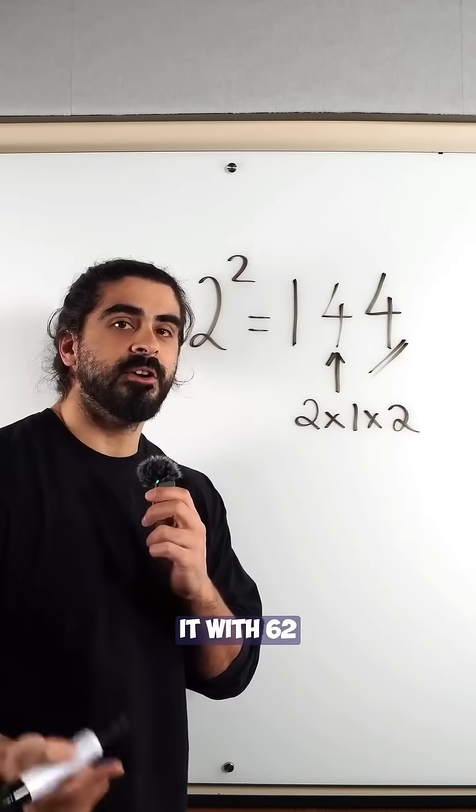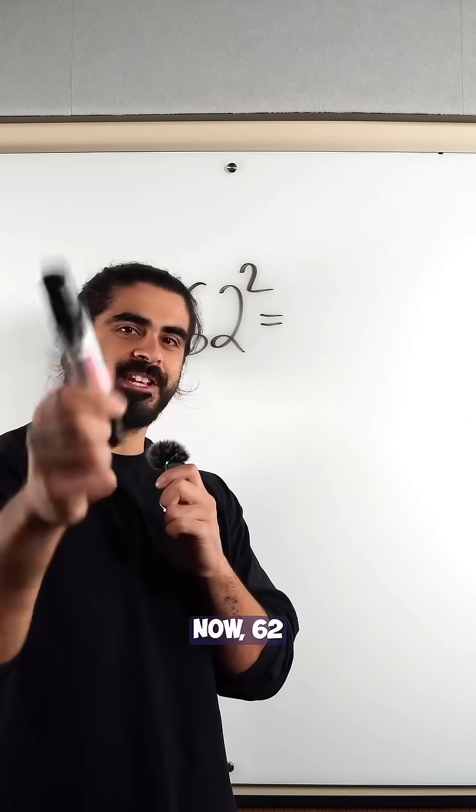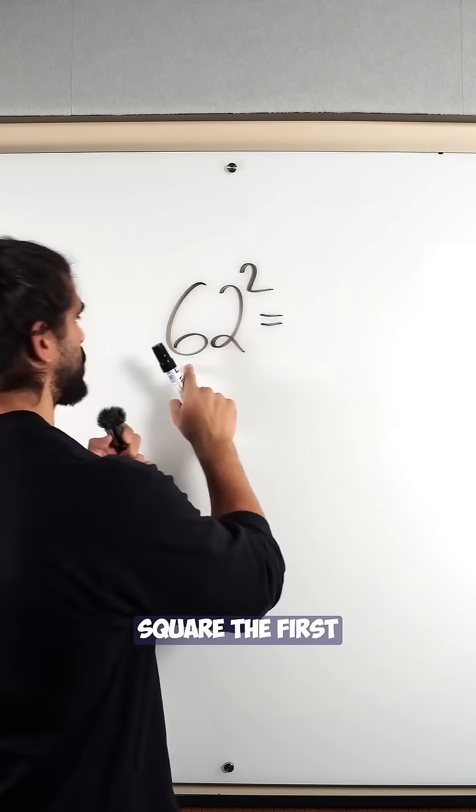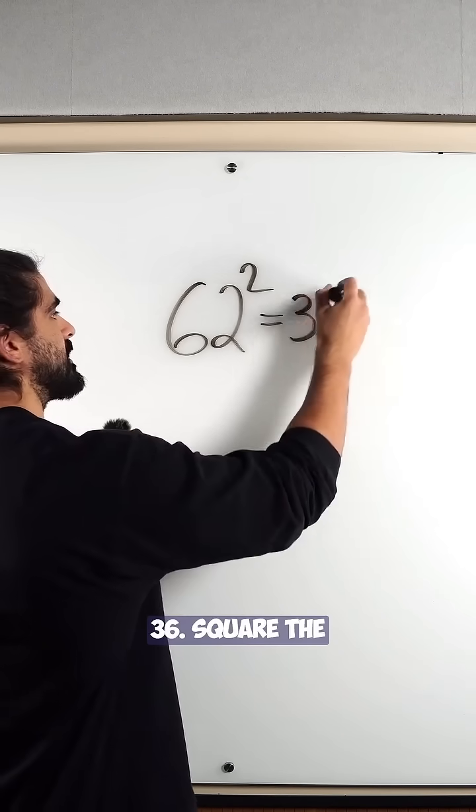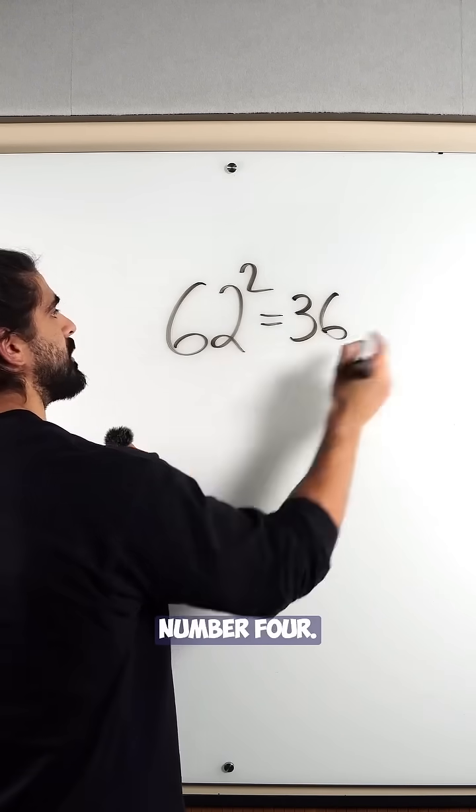Now let's try it with 62 squared. Nice. Now 62 squared. Square the first number, 36. Square the second number, 4.